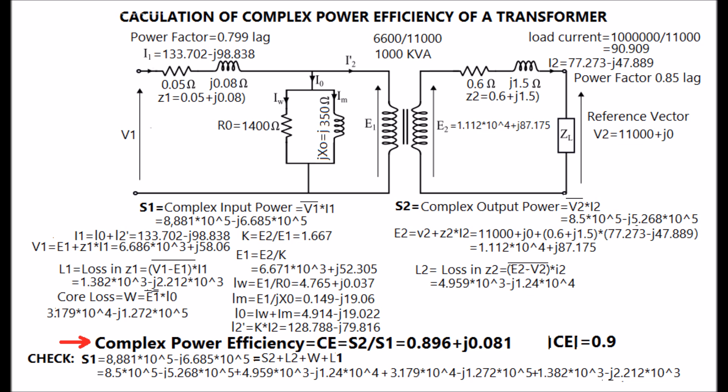Now, complex power efficiency can be calculated as S2 by S1, which is equal to 0.896 plus J 0.081 as shown in the display.